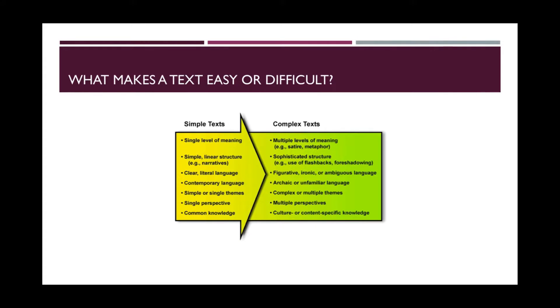Simple texts have a single level of meaning. It has simple linear structure, like in a narrative, clear literal language, contemporary language that's easy to access, simple or single themes, single perspective or point of view, and common knowledge.